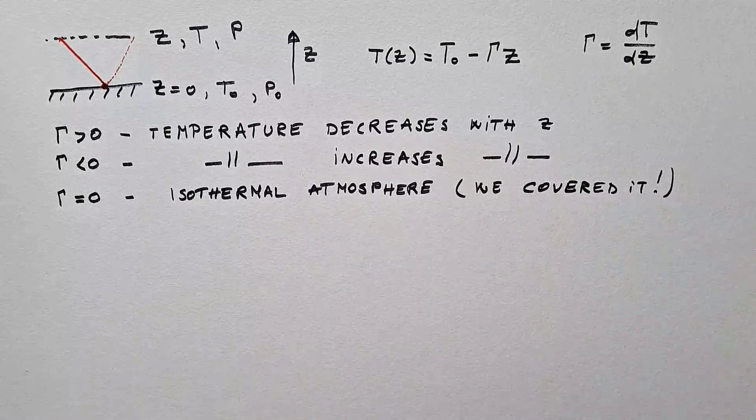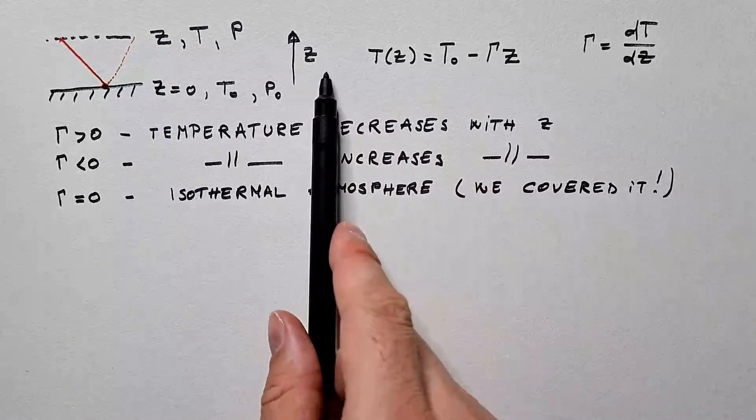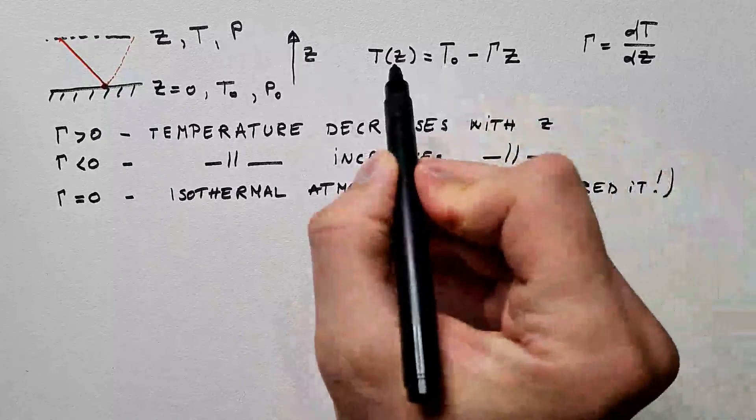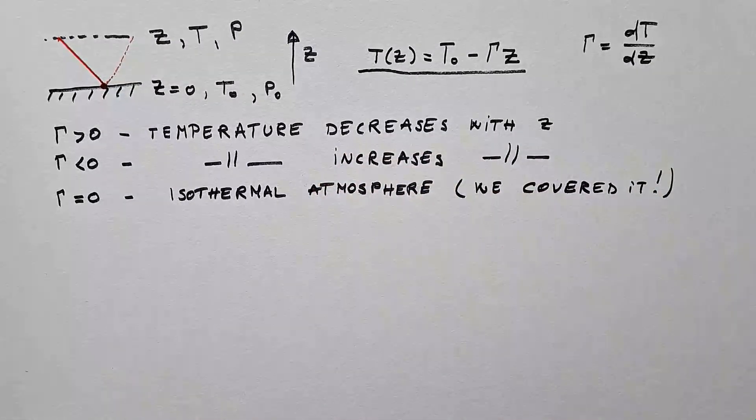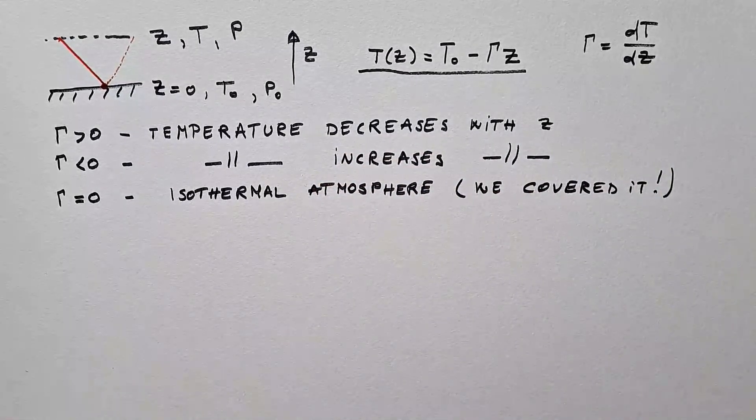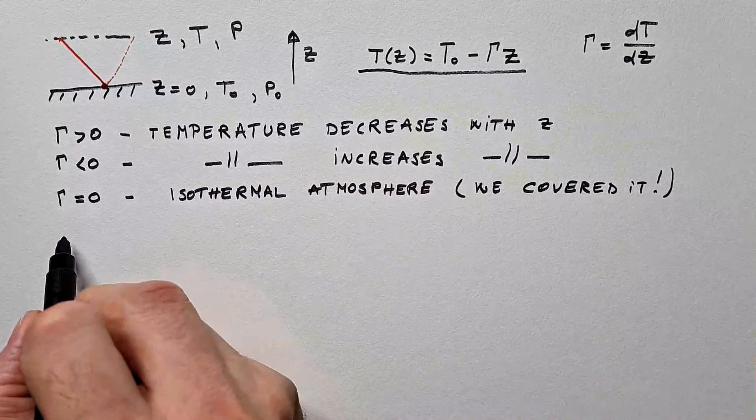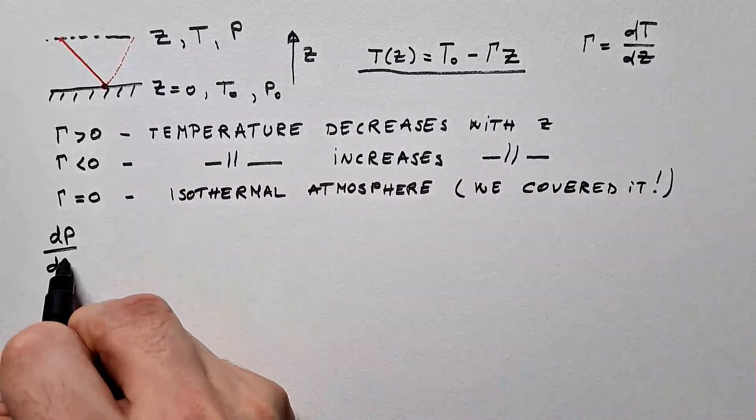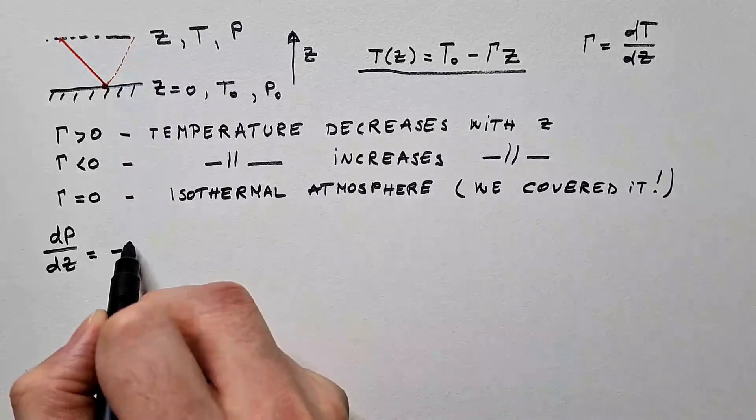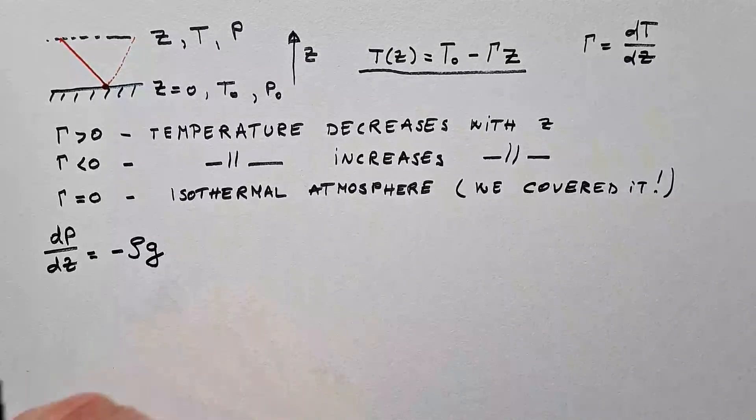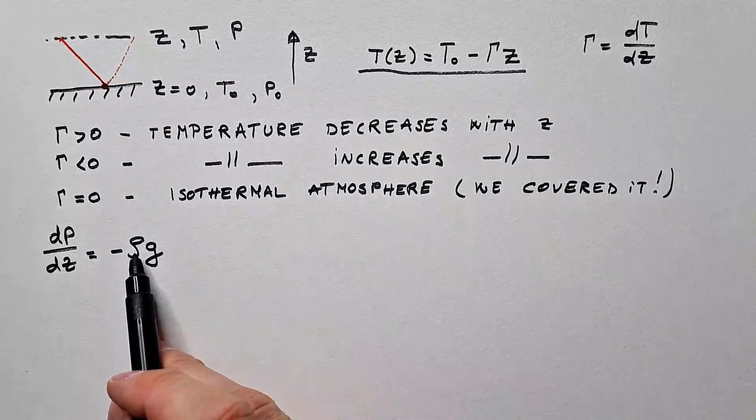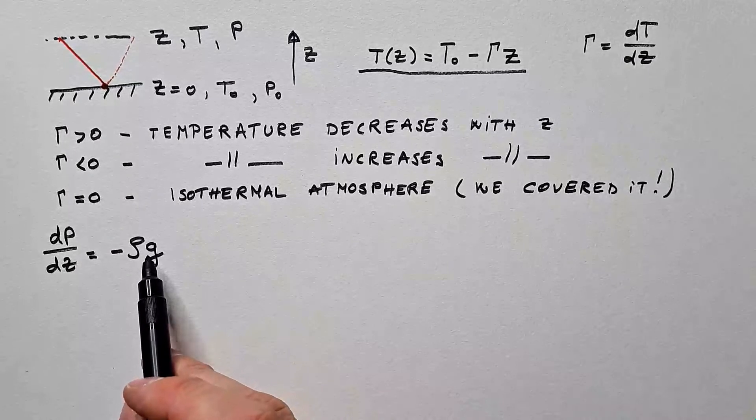Now, to see how pressure will behave as a function of height under this assumption, we will start by considering hydrostatic equation. dP over dz is minus ρg, where ρ is air density, and g is gravitational acceleration.